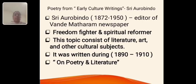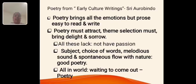The next prose is Poetry, an extract from Aurobindo's early cultural writings. Aurobindo was born in the year 1872 and died in 1950. He is a multi-talented person and was also the editor of Vandemataram newspaper. He is a freedom fighter, spiritual reformer, and saint. This topic consists of literature, art and other cultural subjects dealt with generally in his early cultural writings. This collection of writing series was written during the years 1890 to 1910. Regarding poetry and literature, Aurobindo discussed how poetry is very important — it brings all kinds of emotions, it must attract, delight, or move the readers to sorrow. It is not an easy task to write it. He discussed what makes a good poem.